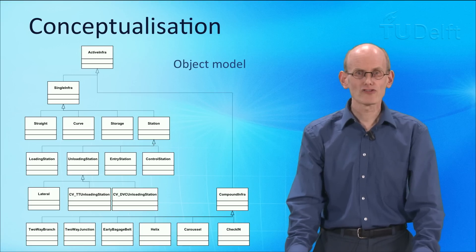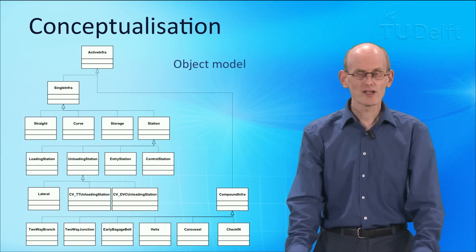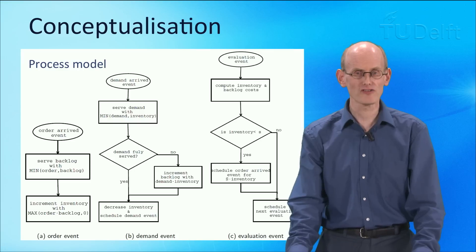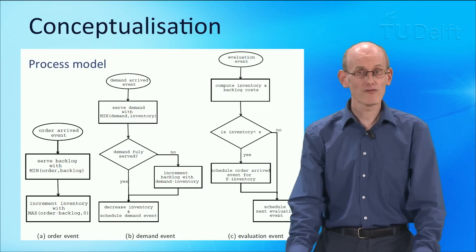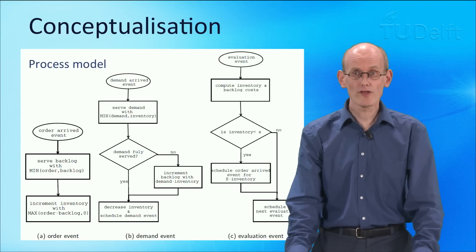The conceptualization is often carried out using some kind of diagramming technique that makes it clear what the models look like. This is for example a model of a part of the infrastructure of a large airport, and with this we can look at how we build up the model from smaller pieces. We can also look at the flow of the model, for instance in a process model such as a flow diagram, in this case aimed at queuing theory and inventory theory.